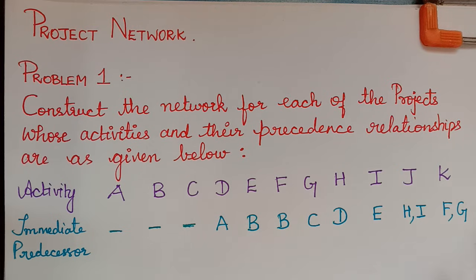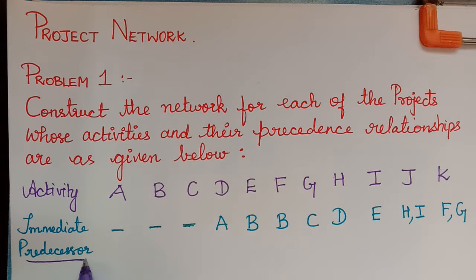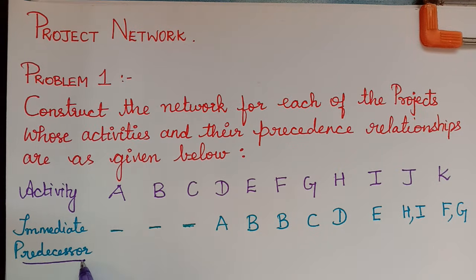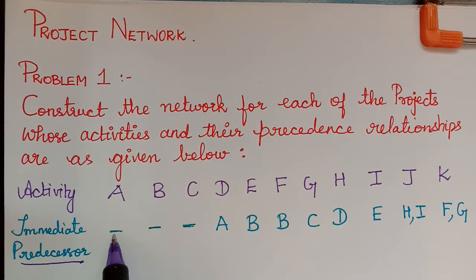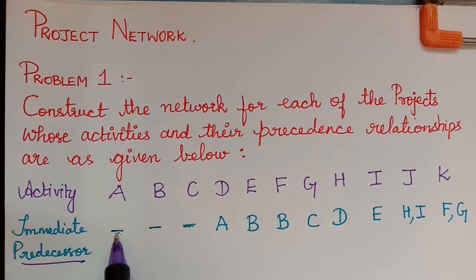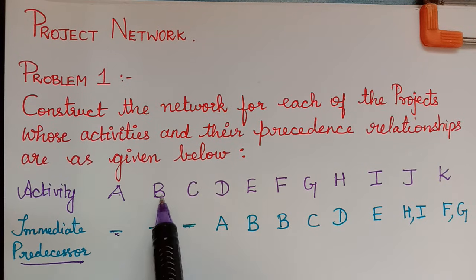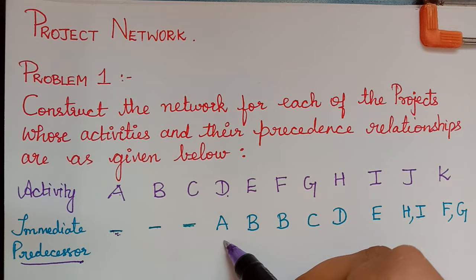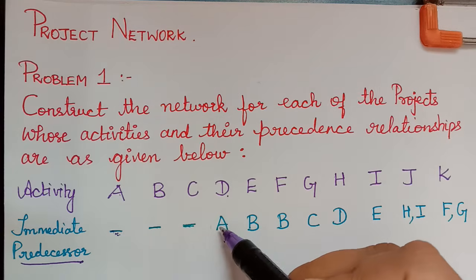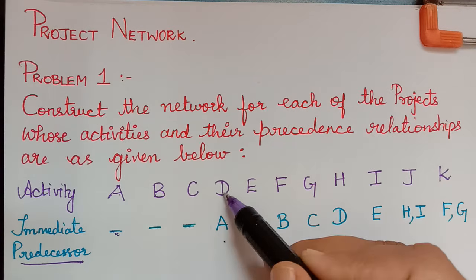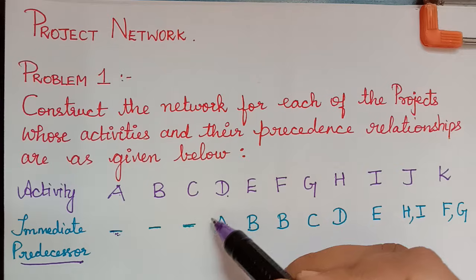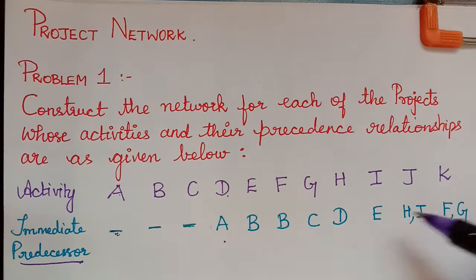To draw the network diagram, first we should know what a predecessor is. Activity A does not have any predecessor, meaning there is no activity before activity A. Similarly B and C have no predecessor. Whereas for activity D, the predecessor is activity A — activity A happens first and following it, activity D emerges as an emanating activity from activity A.